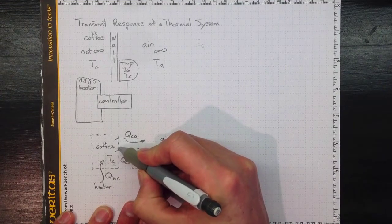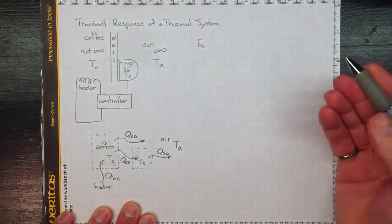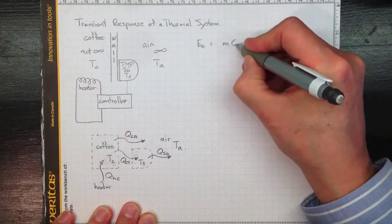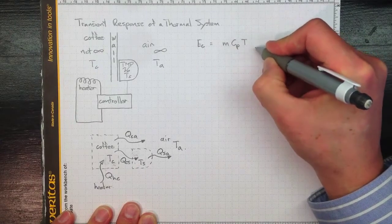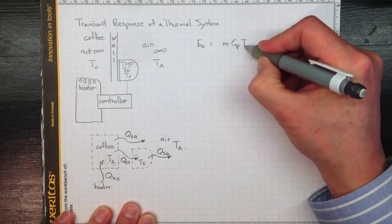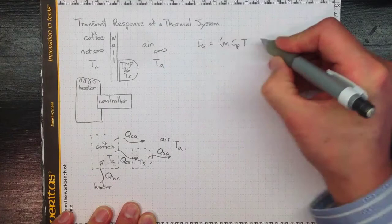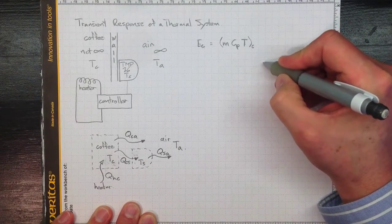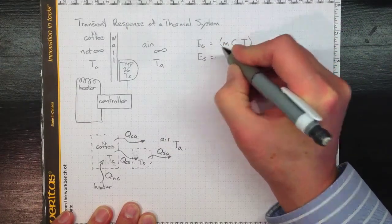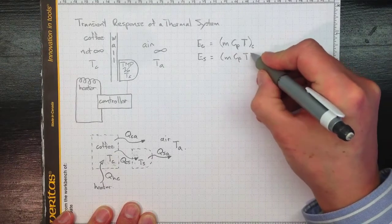So the energy in the coffee will depend on how much coffee there is, so the mass of the coffee and its specific heat and the temperature of the coffee. So the more coffee, the larger the specific heat of coffee which is pretty close to the specific heat of water, or the higher the temperature, the more energy there will be in the coffee. And we better keep track of that by putting a subscript C on all of that to recognize that that's the coffee. Likewise, we can look at the total amount of energy that's in the sensor, and it'll be the mass times the specific heat times the temperature for the sensor.